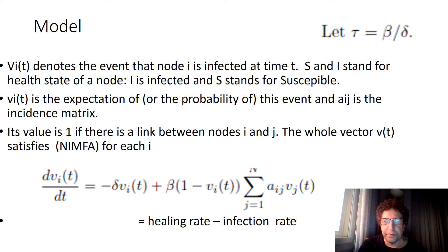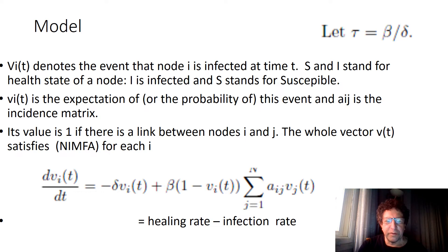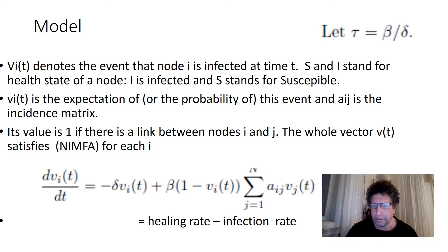I now introduce the NIMFA approximation. Let capital V_i be the event that the i-th node is contaminated. Then the expectation of V_i, which we denote by small v_i(t), is the probability that node i is contaminated. And it is proportional to v_i(t).